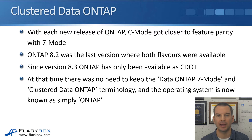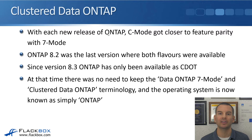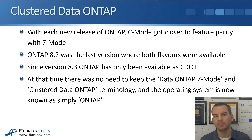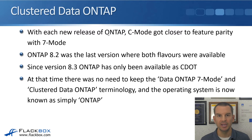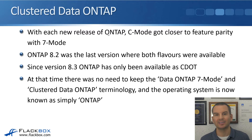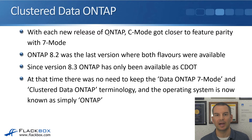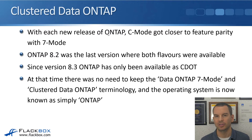With each new release of ONTAP, NetApp were working on getting those features into clustered ONTAP as well, and they finally did it in ONTAP 8.3. ONTAP 8.2 was the last version where both flavors were available. Because they had practical feature parity in ONTAP 8.3, seven-mode was dropped and you could only get ONTAP in the clustered version. From 8.3, ONTAP is simply known as ONTAP, referring to that same Clustered Data ONTAP that existed before version 8.3.